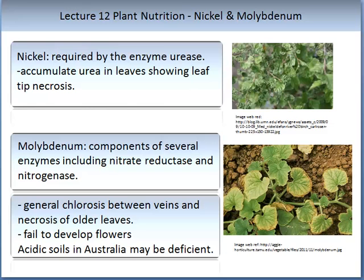Molybdenum is involved in components of several enzymes including nitrate reductase and nitrogenase. When deficient, it shows general necrosis between the veins and necrosis of the older leaves, and the plant may fail to flower. Acidic soils in Australia may be deficient in molybdenum. The image on the bottom right shows a deficiency of molybdenum in cucumber plants.